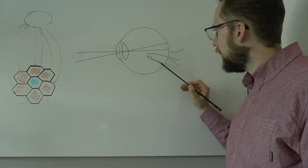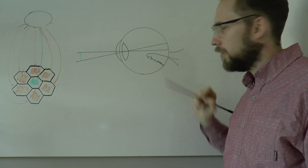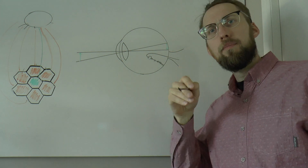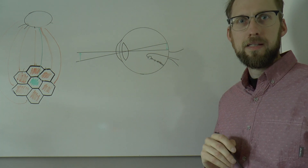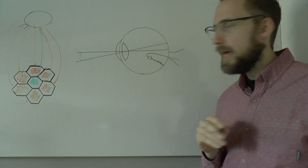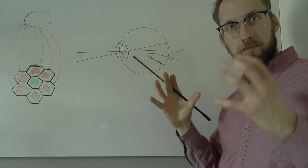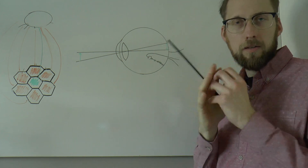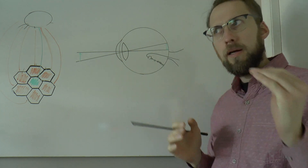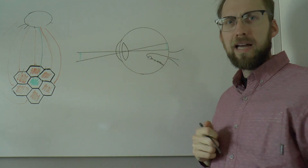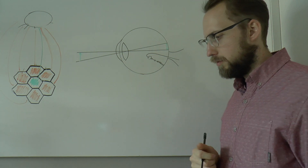They provide output to the bipolar cells, and the bipolar cells provide output to the ganglion cells. It's those ganglion cells whose axons are collected and bundled up, leaving the back of the eyeball as the optic nerve.